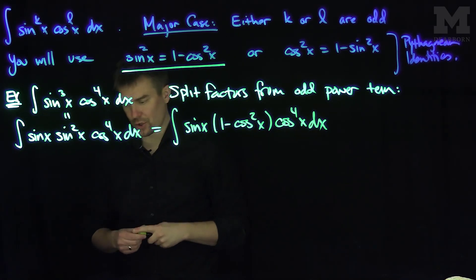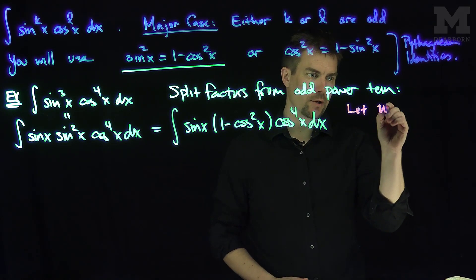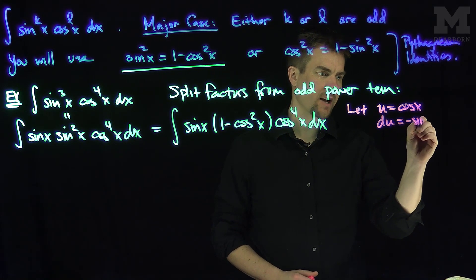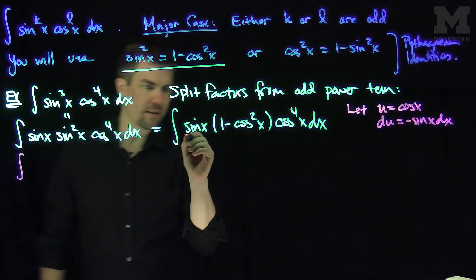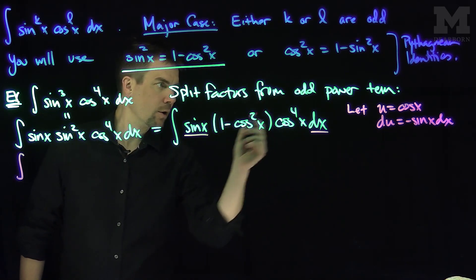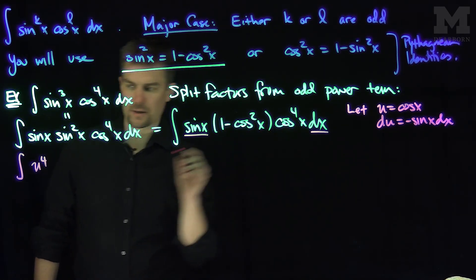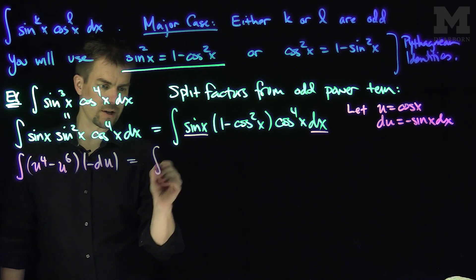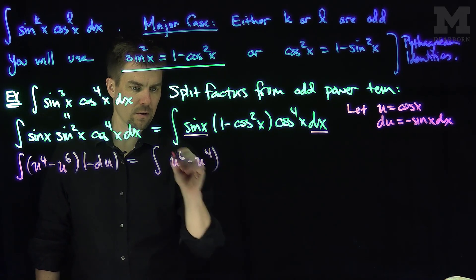Now we can make a u-substitution. Let u equal cosine of x. Then du equals negative sine of x dx. So my integral becomes: I have sine of x dx, which is the same as negative du. I have cosine to the fourth, which is u to the fourth. Then I have cosine to the sixth, which is minus u to the sixth, times negative du.